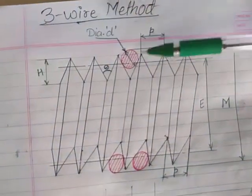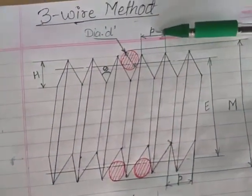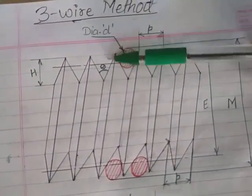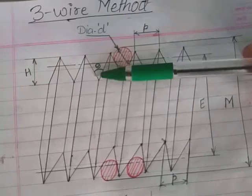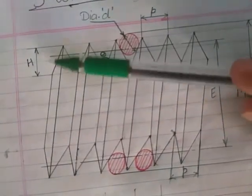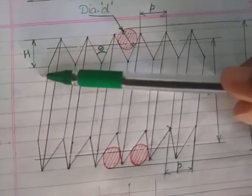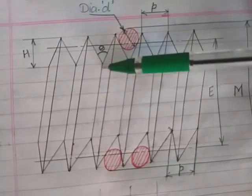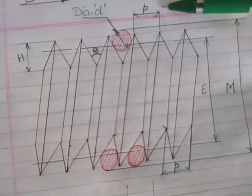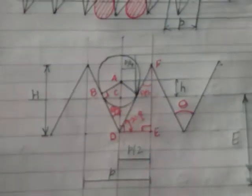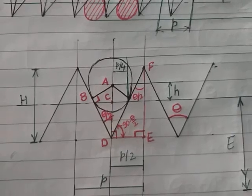Now, zooming into this part: small p is the pitch, theta is the thread angle, and capital S is the depth of thread. We will be using the depth of thread, thread angle, and the pitch for finding the effective diameter.